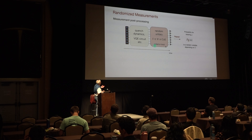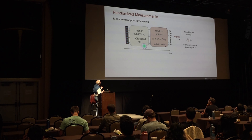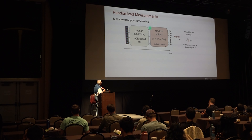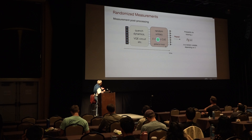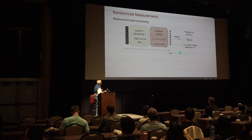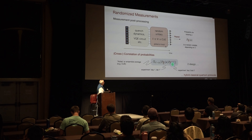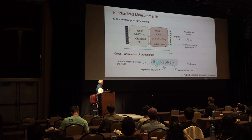The general concept of randomized measurement is this: there may be quench dynamics, a circuit, or whatever dynamics, then you got your wave function, you apply unitaries — which could be global or local unitaries — you get your bit strings, and you have your quantum mechanical probabilities for a given unitary. You have bit strings called S and S', and then a classical cross-correlation of these different probabilities.